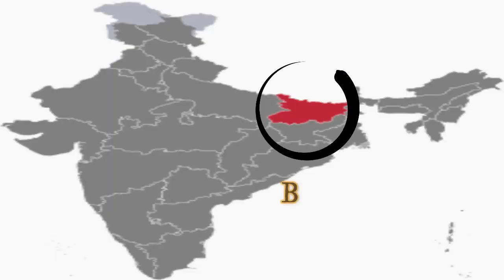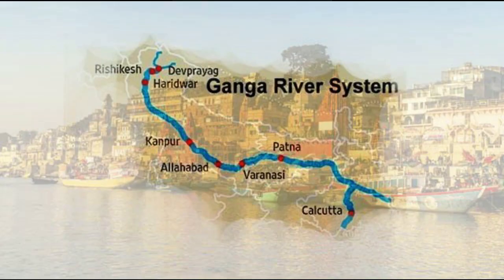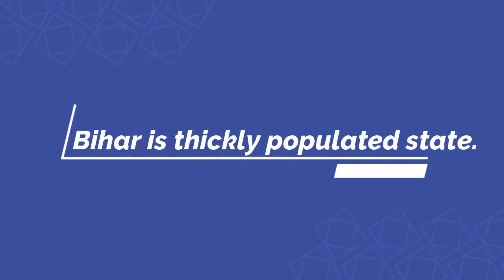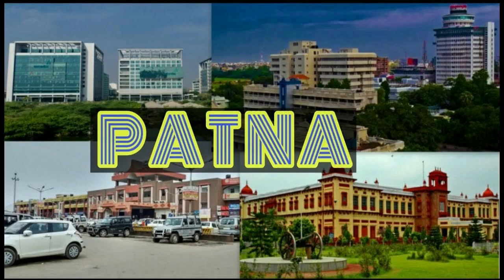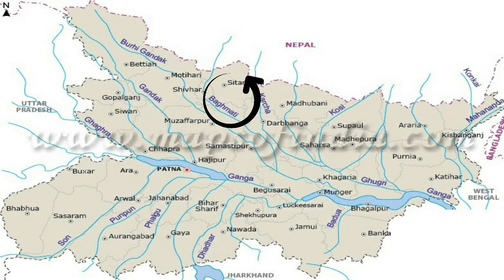Let's start with the state of Bihar. Bihar is a state of eastern India, situated towards the east of Uttar Pradesh in the Ganga Basin. Bihar is a thickly populated state. The capital of Bihar is Patna. The rivers Ganga and its tributaries — the Ghagra, the Gandak, the Bhagmati, the Kosi, and the Mahananda — flow through the state.